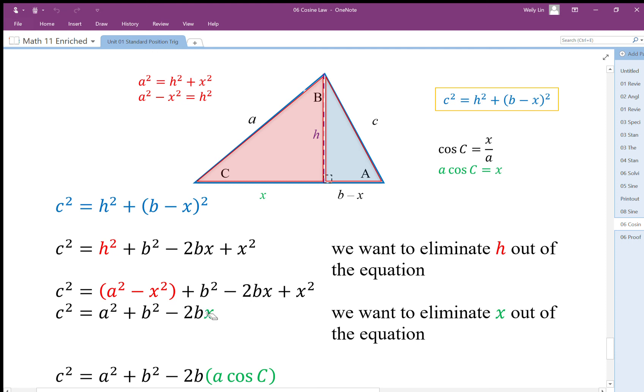We want to be able to get rid of that x because everything else is consistent with the cosine law. To eliminate x, we go back to here. We've shown that x equals a cosine C, so when we replace that with a cosine C, we end up with our cosine law.